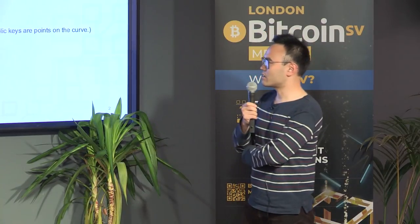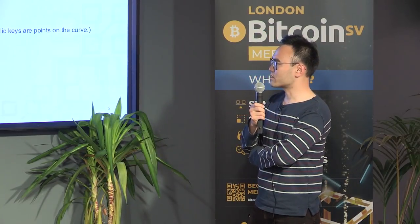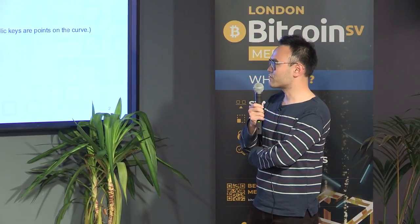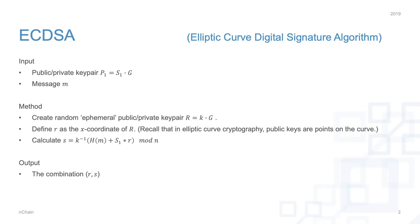N is the order of the elliptic curve point group — basically there are N points on that elliptic curve. We now have little r and little S, which form our signature. This is the signing algorithm to produce a signature R and S.